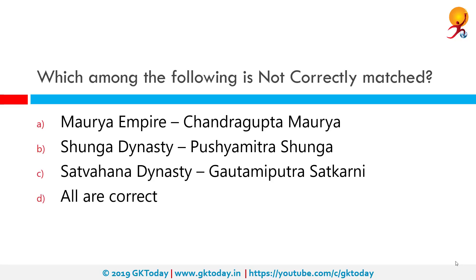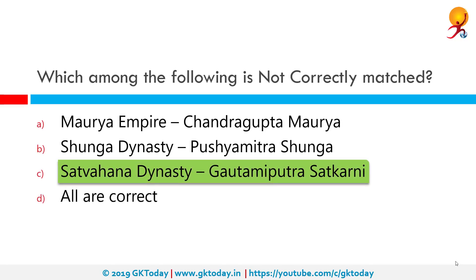Which among the following is not correctly matched? Among these options, Satavahana dynasty matched with Gautamiputra Satkarni is not correct. In fact, the founder of the Satavahana dynasty was Simukh, not Gautamiputra Satkarni.